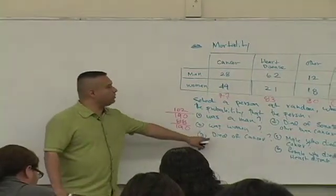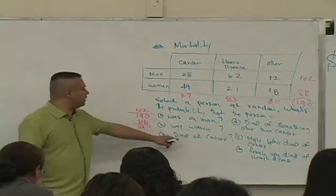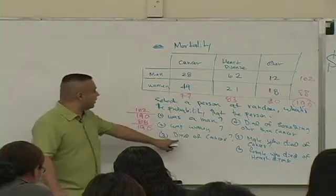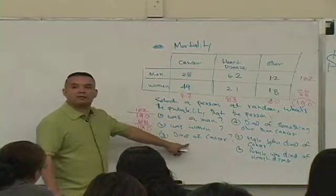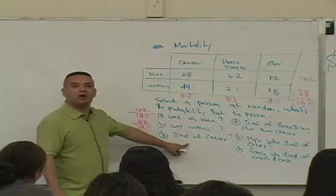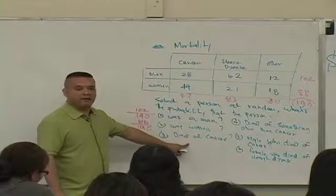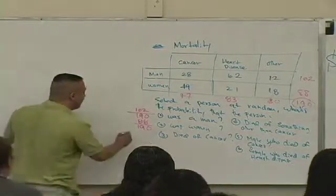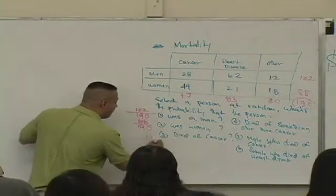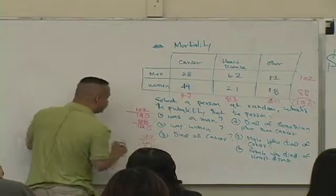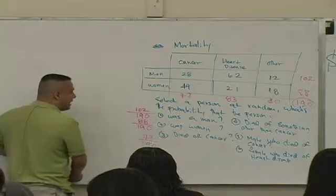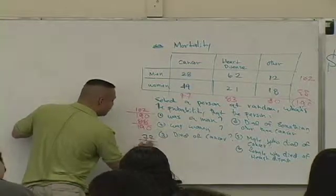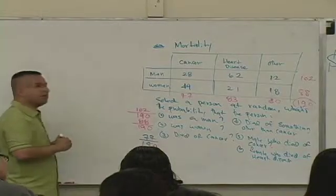What about question 3? What does it mean to die of cancer? Is there any reference from question 3 to the sex? No. So you could be either a male or a what? Or a female. So how many people died of cancer? 77 now over what? 190.